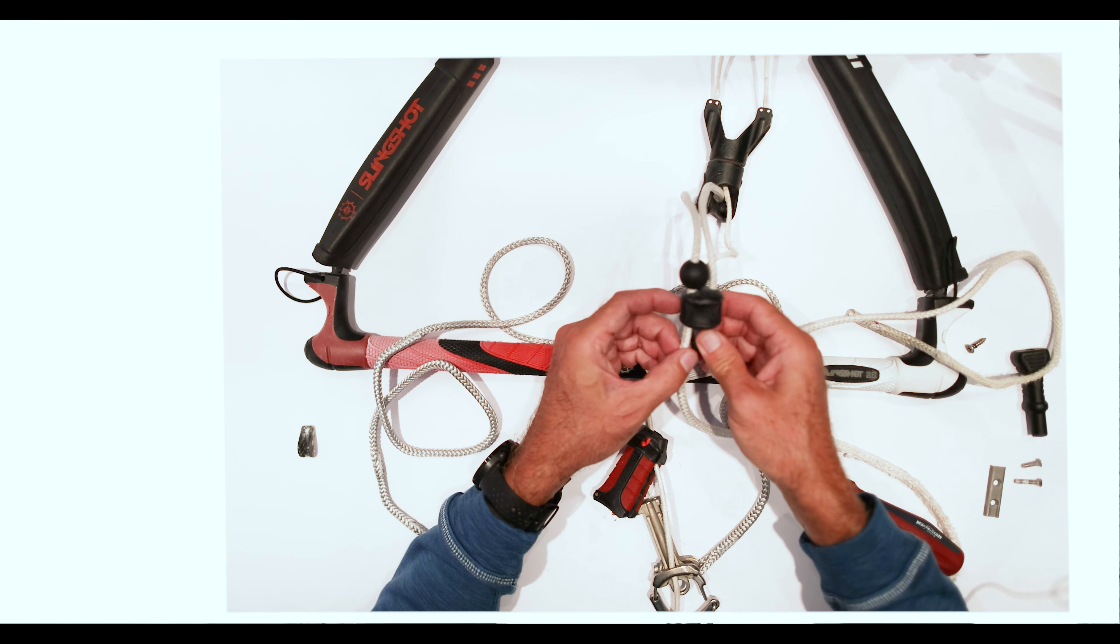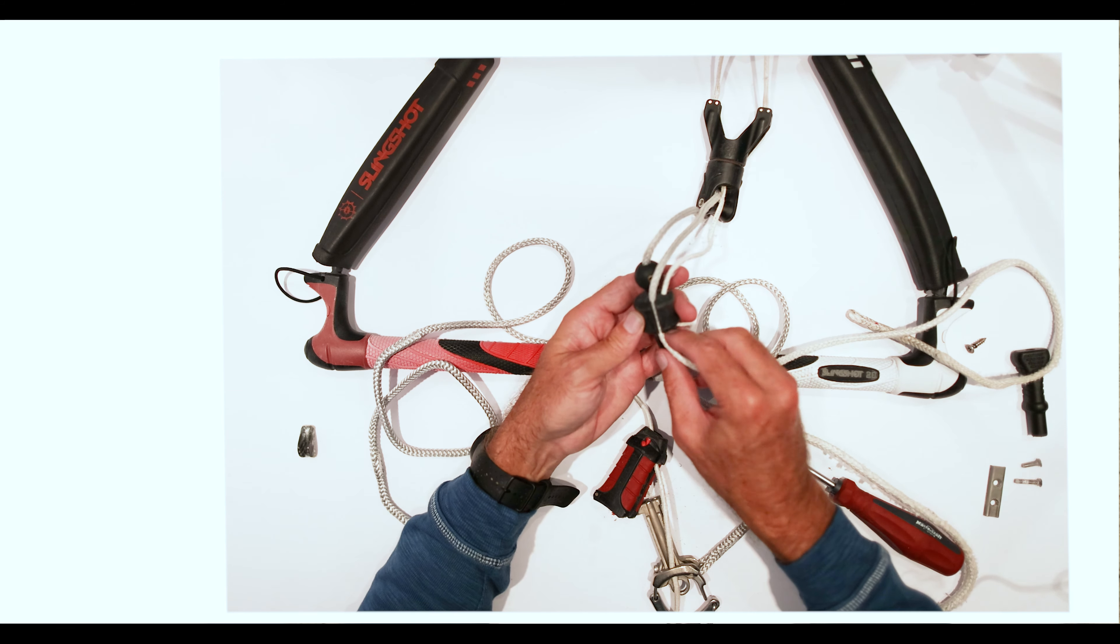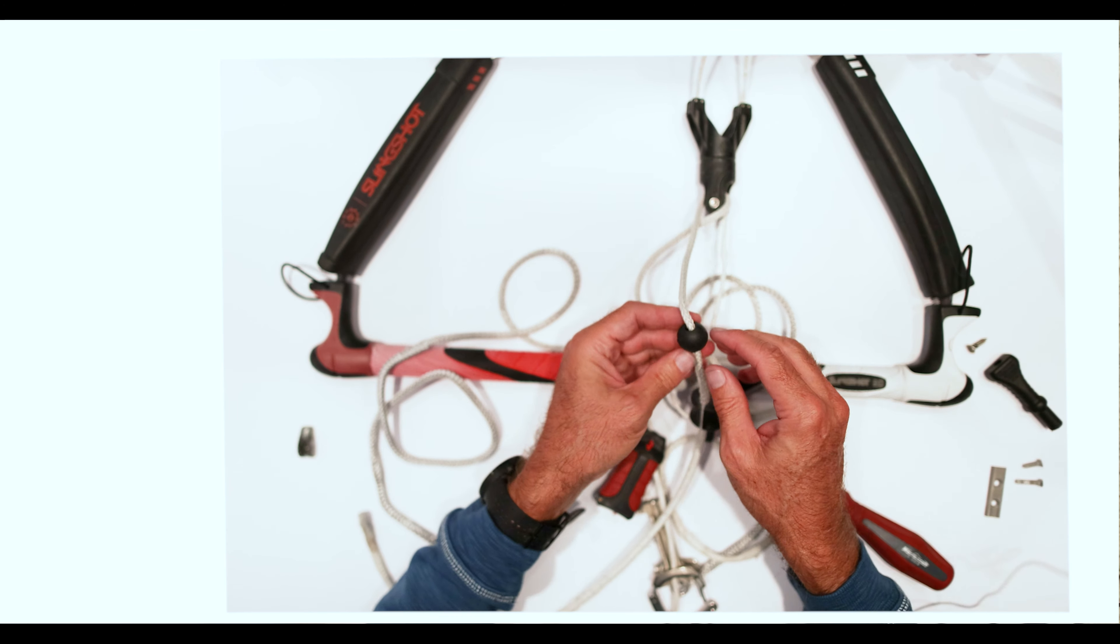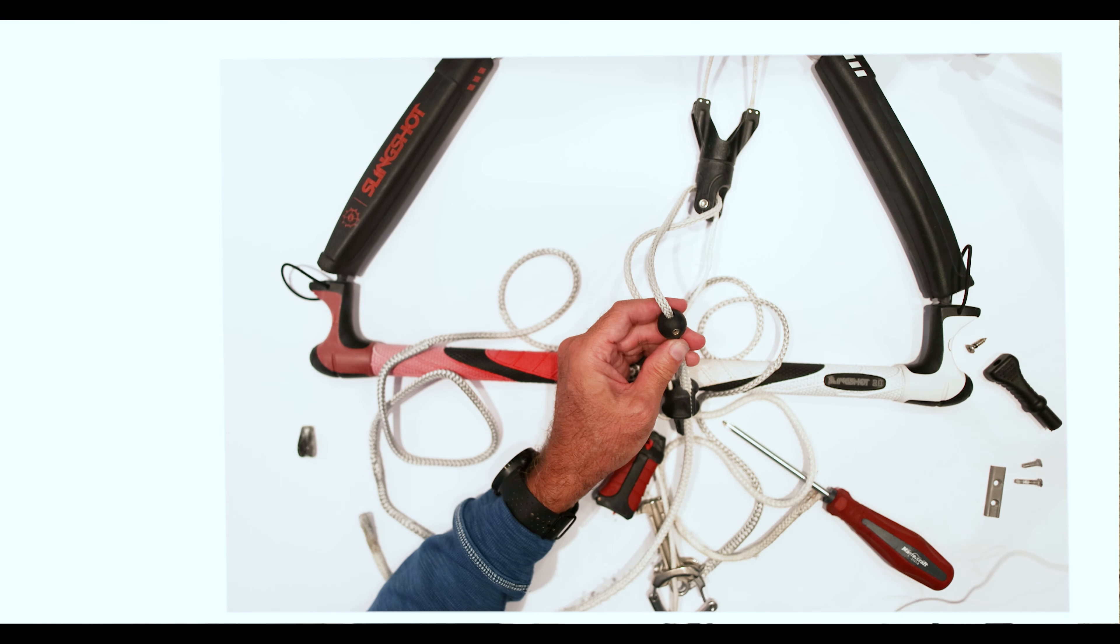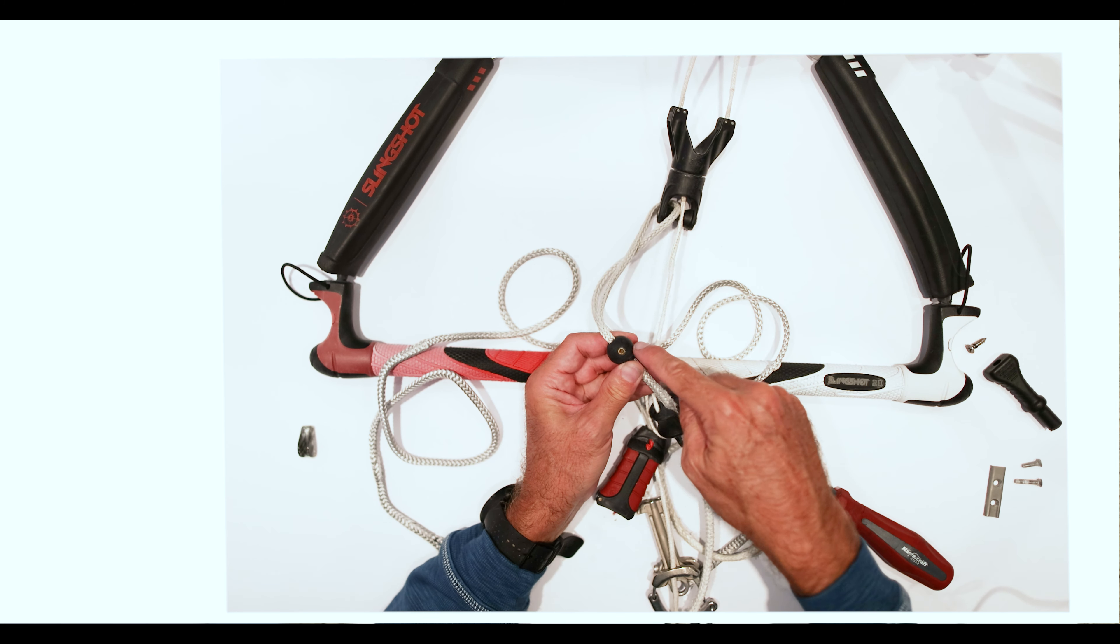Now you'll notice one side is thicker than the other side. This thin side comes through the one slot. You need an Allen wrench for that little piece right there.